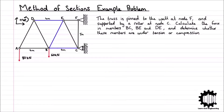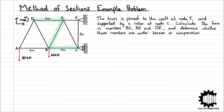We have a fink truss which is pinned to a wall at node F and supported by a roller at node C. There is an external vertical force of 80 kN acting downwards at node A, and an external vertical force of 60 kN acting downwards at node B. The horizontal members are 4 m in length and the vertical members are 5 m in length. Using the method of sections, we must calculate the forces in members BC, BE, and DE, and determine whether each of them is being subject to tension or compression.